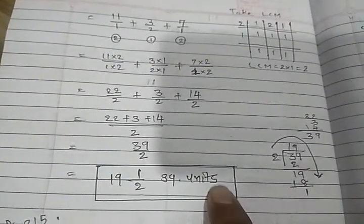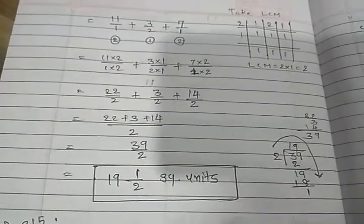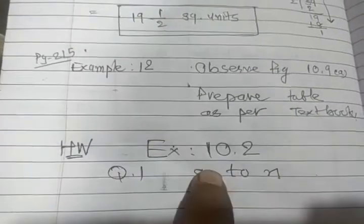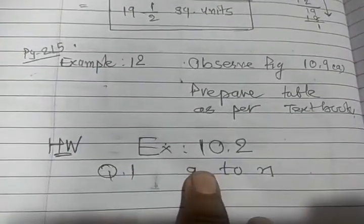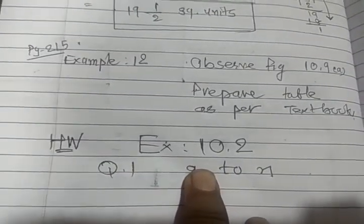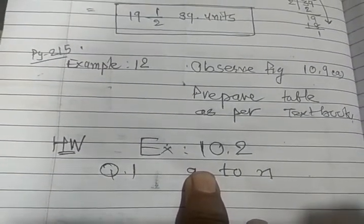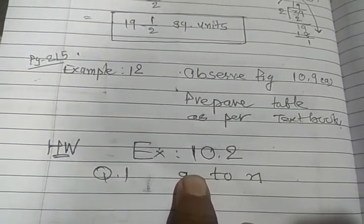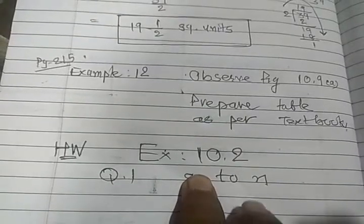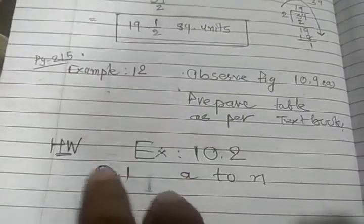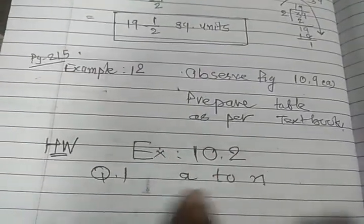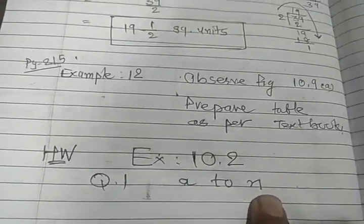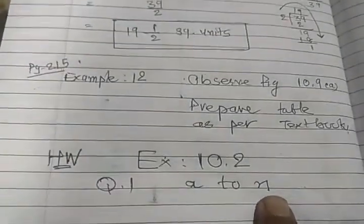Using this method you can do the remaining problems. Example 12 on page 215 — observe figure 10.9A and prepare a table as per the textbook — is homework. Also homework: Exercise 10.2, question number 1, figures A to N, all figures to be done at home.